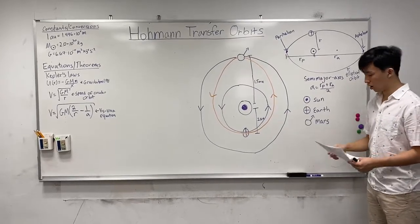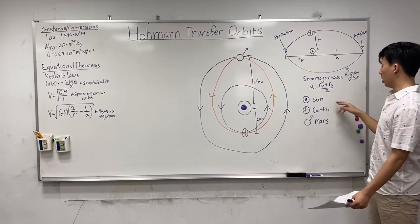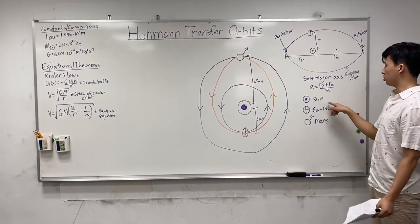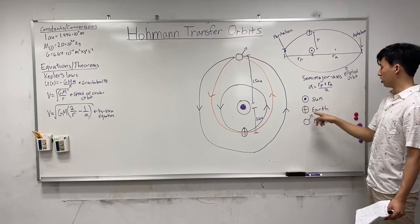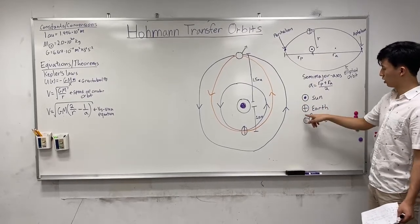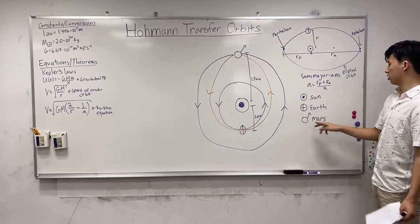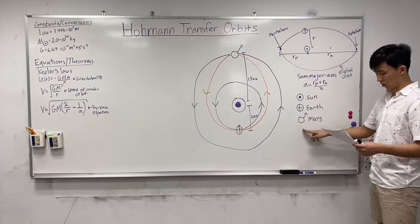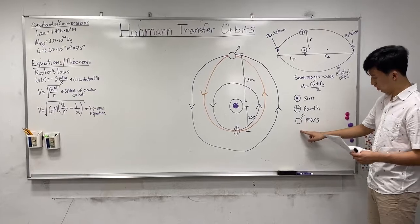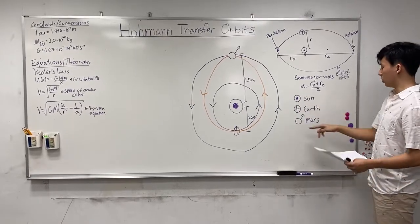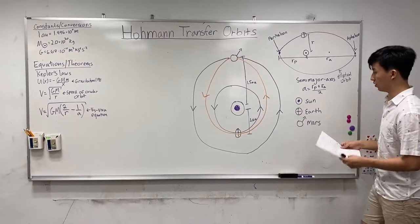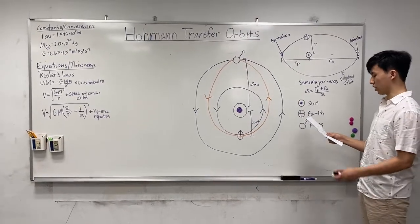Throughout the talk, I'm going to denote the Sun with a circle-dot symbol, Earth with a circle-cross symbol, and Mars with the Mars symbol. These three symbols just correspond to each object.